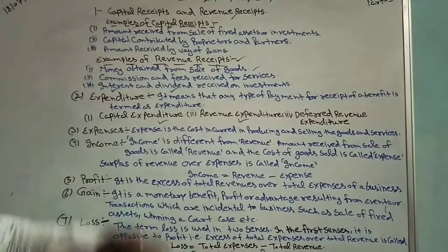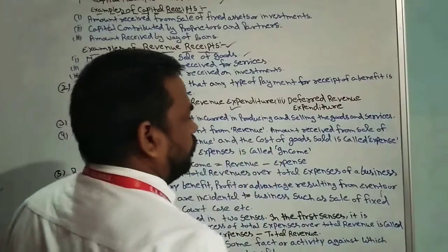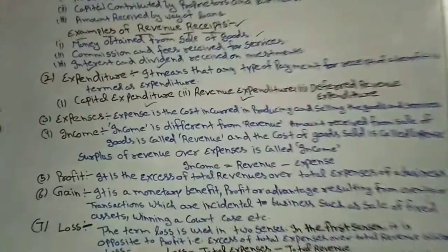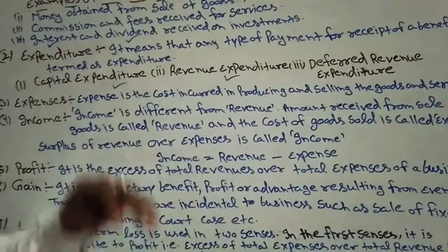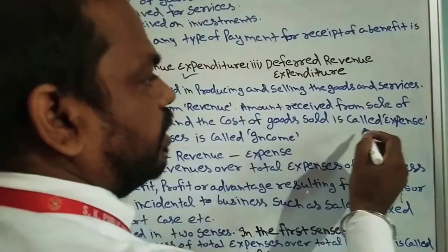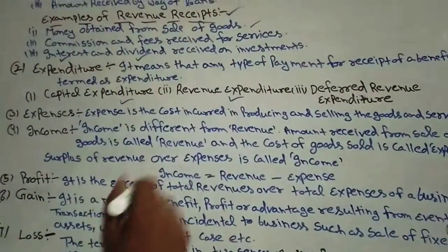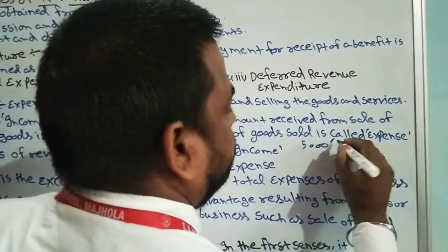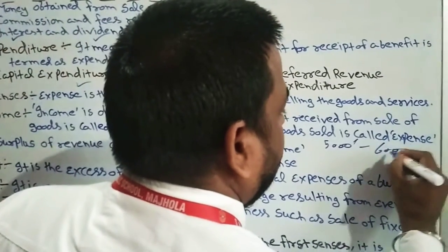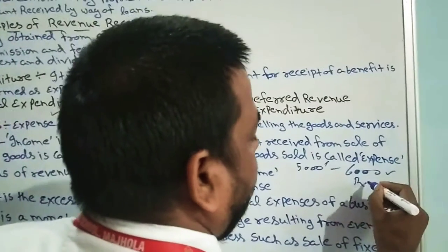The next point is income. Income is different from revenue. The amount received from sales of goods is called revenue. Whatever goods we sold and the amount received from that is called revenue. And the cost of goods sold is called expenses. Suppose we sold goods whose cost was 5000, that becomes cost of goods sold, and we sold it for 6000, so 6000 becomes our revenue.